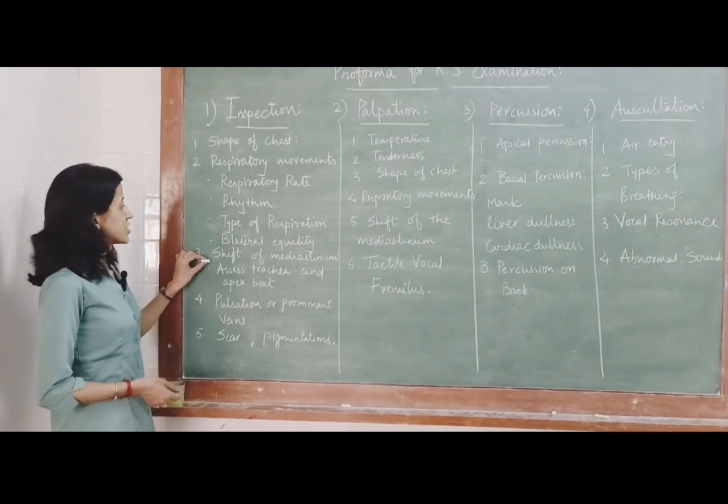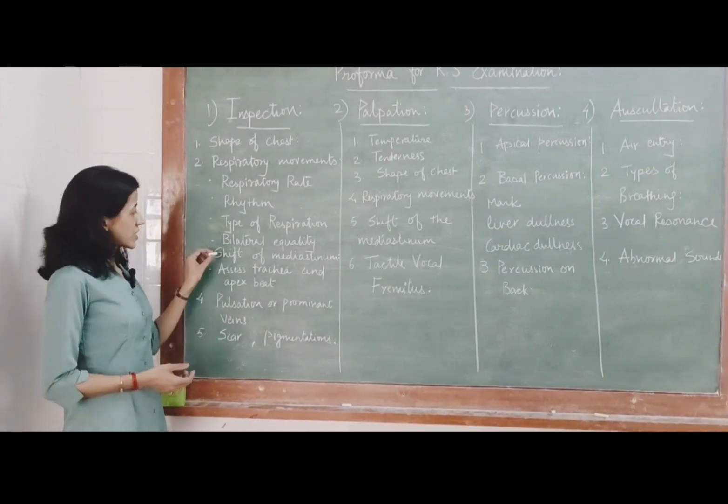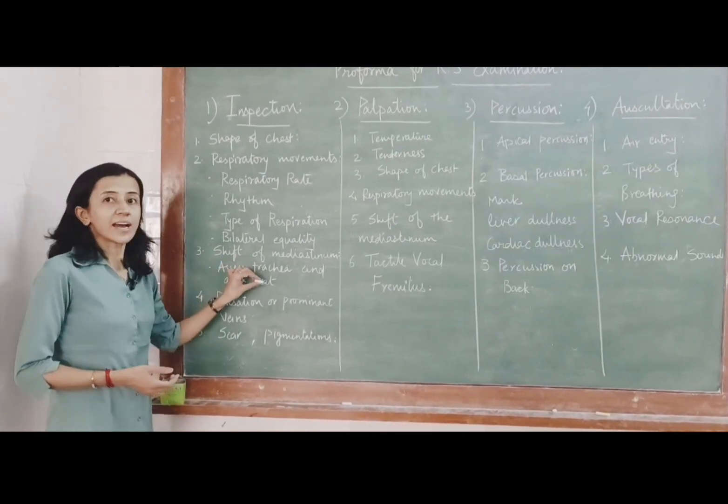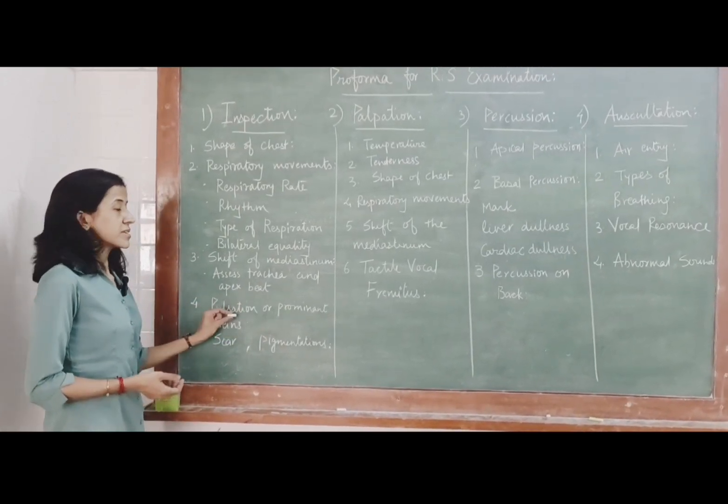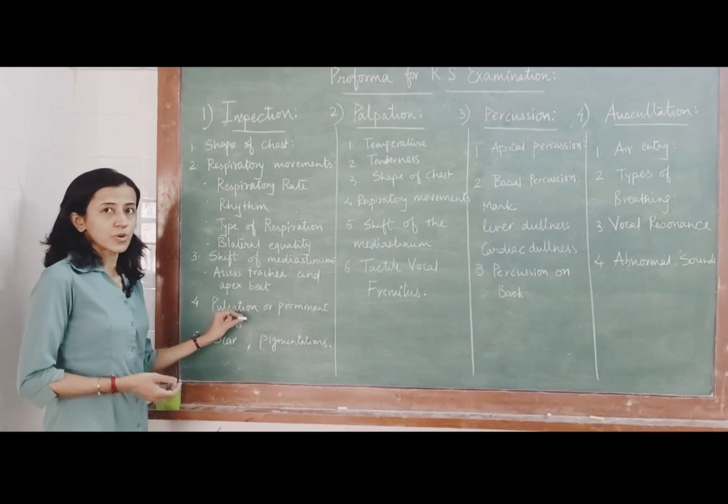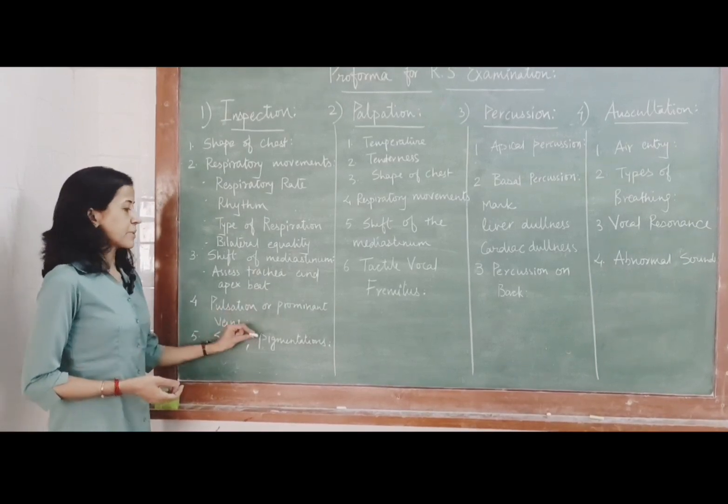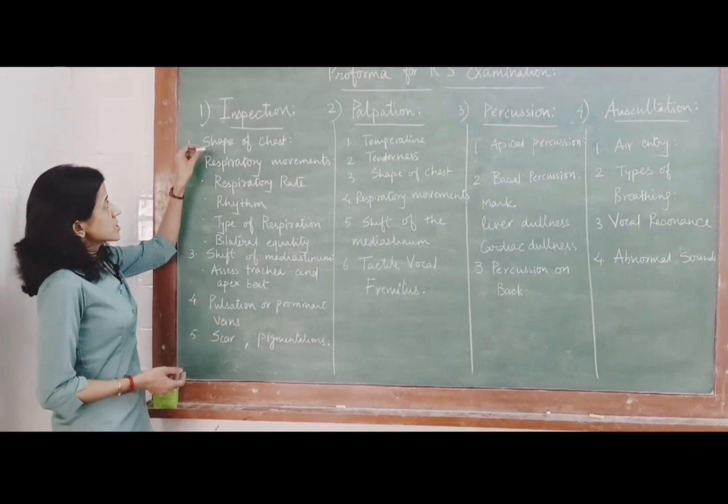Third point to inspect is shift of mediastinum. For that you have to assess trachea and apex beat. Fourth point is pulsation or prominent veins. If they are present or not, you have to note down scar and pigmentation. This is about inspection.